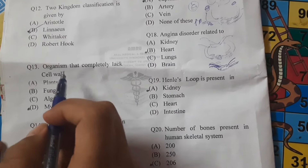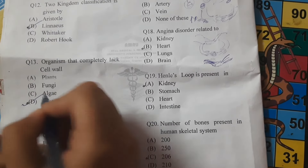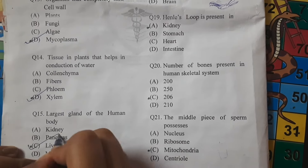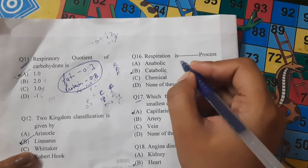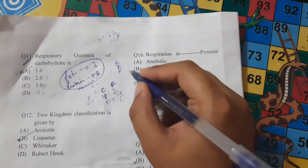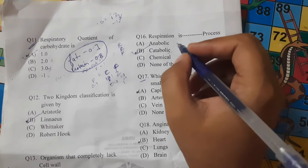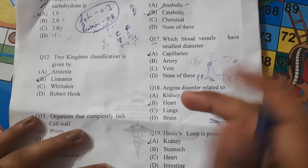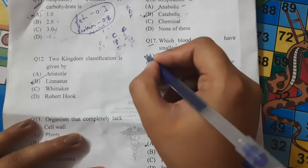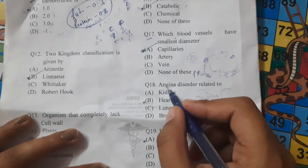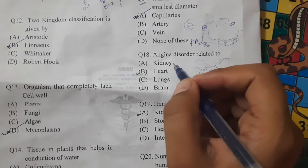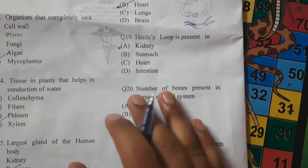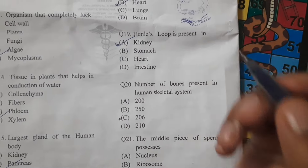The organism that completely lacks a cell wall is mycoplasma. The tissue in plants that helps in conduction of water is xylem. The largest gland in the human body is the liver. Respiration is a catabolic process — catabolism is the breakdown of energy, while anabolism is the building up of energy. Blood vessels with the smallest diameter are capillaries. Angina disorder is related to the heart.